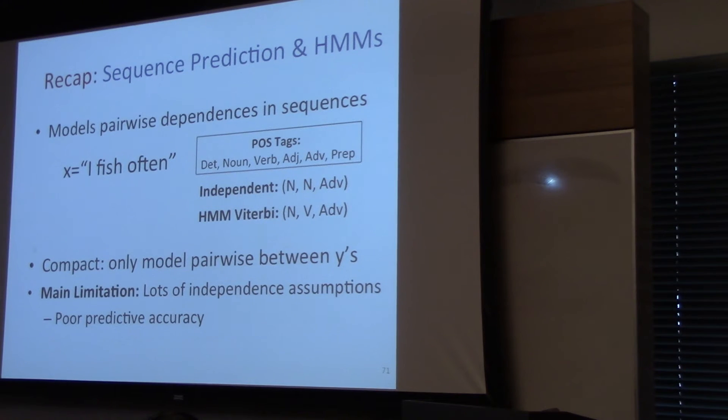The main limitation, just like in naive Bayes, is it still makes a lot of independence assumptions. And so it has, by today's standards, relatively poor predictive accuracy in most tasks.